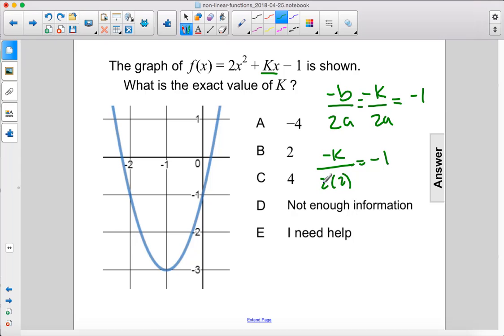So we multiply both sides by 4. We get negative k equals negative 4. Therefore, k equals 4. The answer is c.